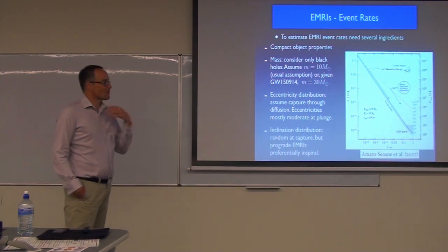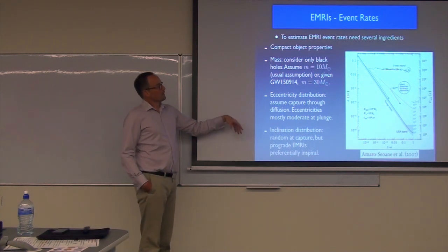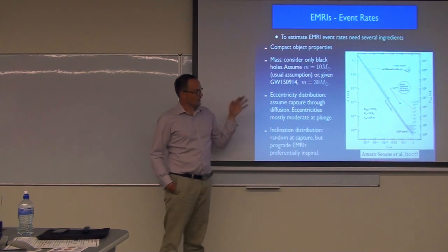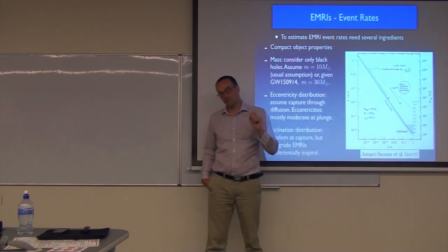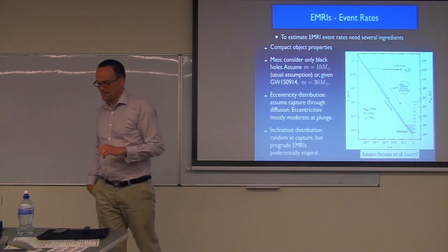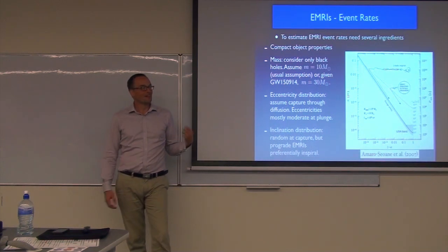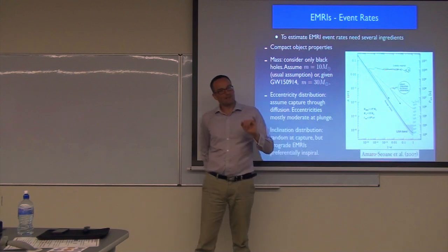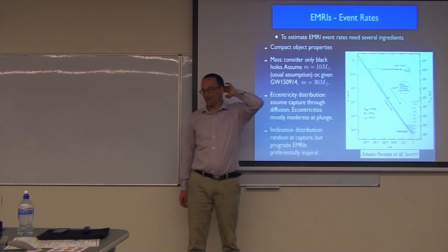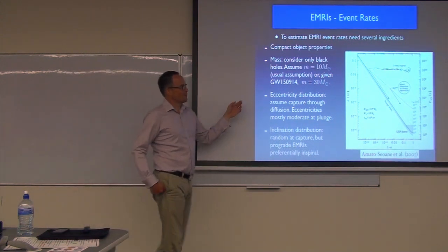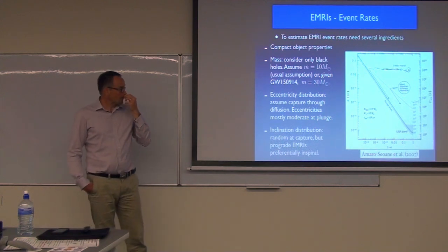Another factor is understanding how far away we can see EMRIs, which depends on properties of the compact object, particularly masses and inclinations. Traditionally, we've assumed the black holes falling into the supermassive black hole have a mass about 10 solar masses. When GW150914 came along, we had two black holes of about 30 solar masses. If that's more typical, we can see these systems further away, though the overall rate has to be lower because of the overgrowth problem. Overall, assuming heavier black holes is good because we can detect more events.